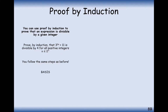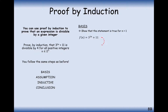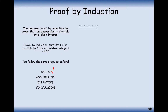Same steps as before: basis, assumption, inductive, and conclusion. Basis step: prove the n equals 1 case. Substituting n equals 1 gives 3 squared plus 18, which equals 20 — clearly divisible by 4. Next step is to assume that our theorem works for n equals k, so 3 to the power of 2k plus 11 is divisible by 4.